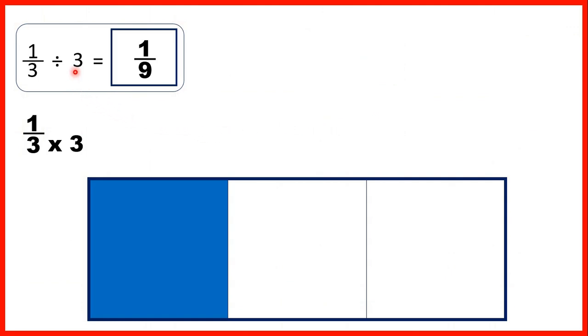So let's think about what dividing by 3 means. It means we can split something into three pieces and keep only one of those pieces. If we take one third, split it into three pieces and keep only one of those pieces, you can see that we now have one part out of nine of our fraction shaded red. That's why our answer is 1 ninth.